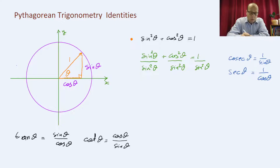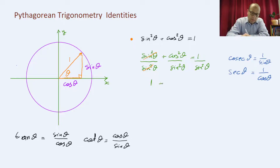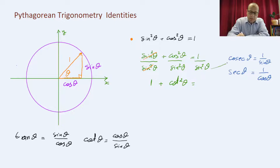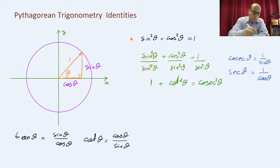Sine squared theta over sine squared theta cancels and gives 1. Plus cos squared over sine squared, by the cot identity, is cot squared theta. And 1 over sine squared is cosecant squared. That gives us 1 + cot squared theta = cosecant squared theta, and that is the second identity.